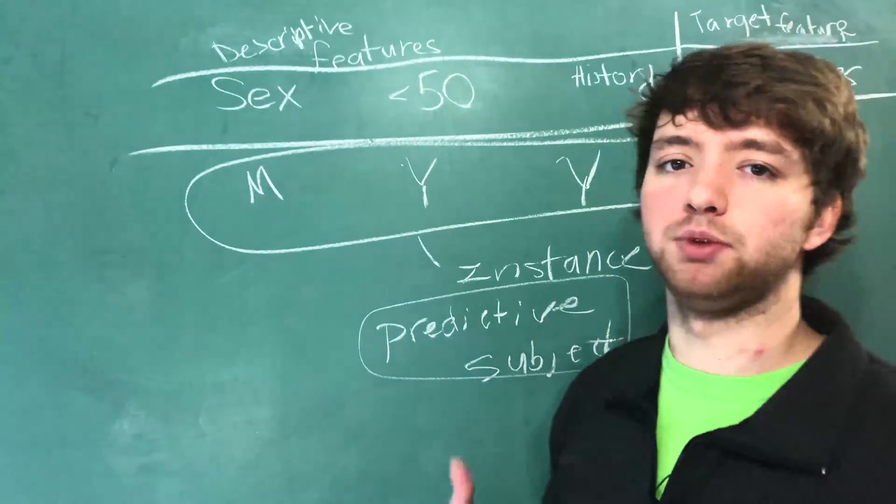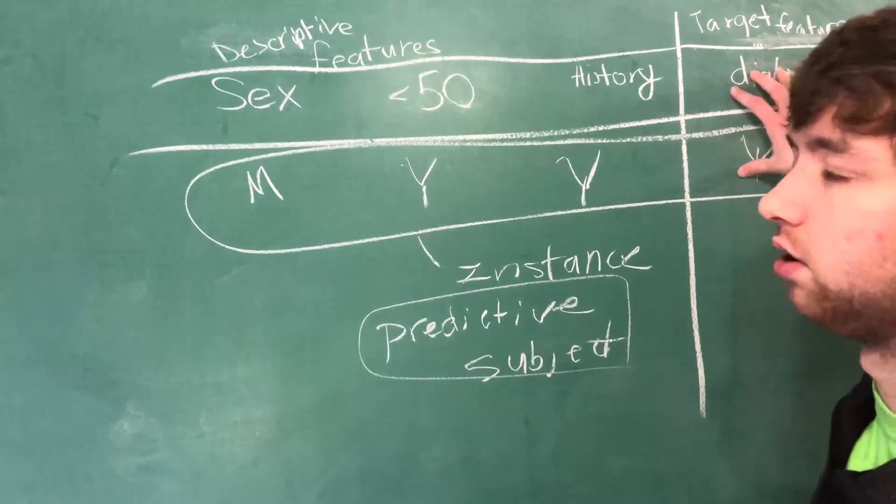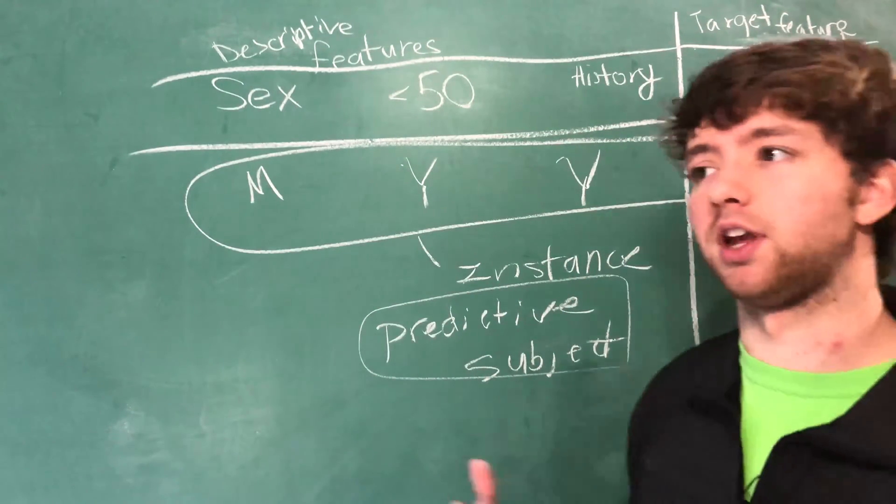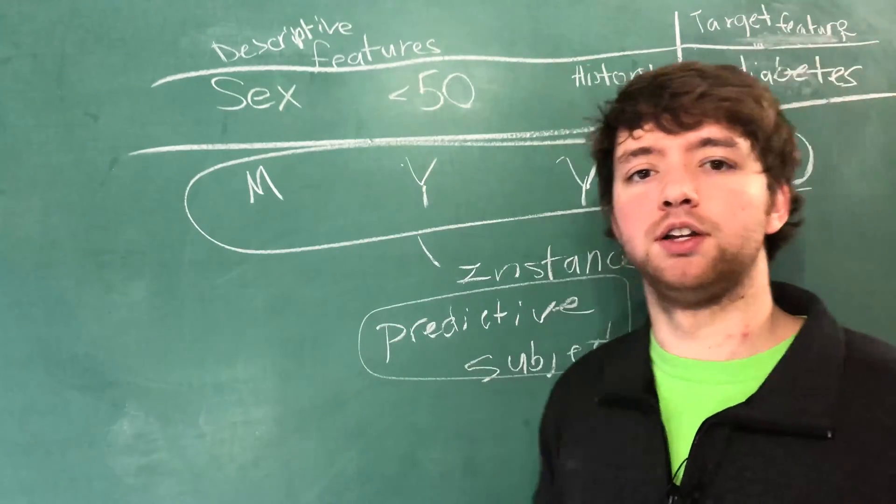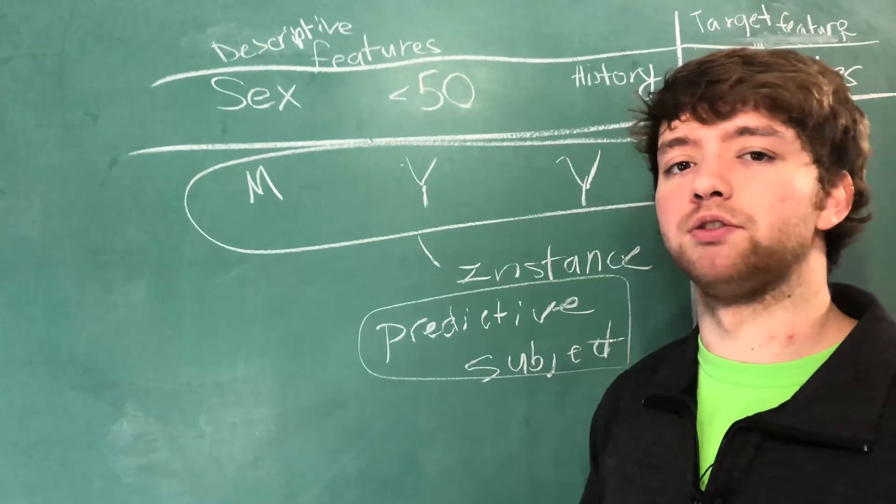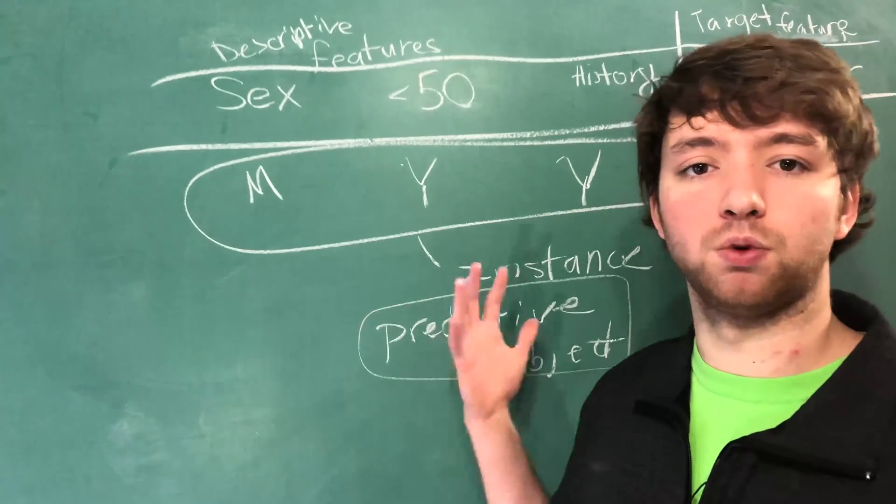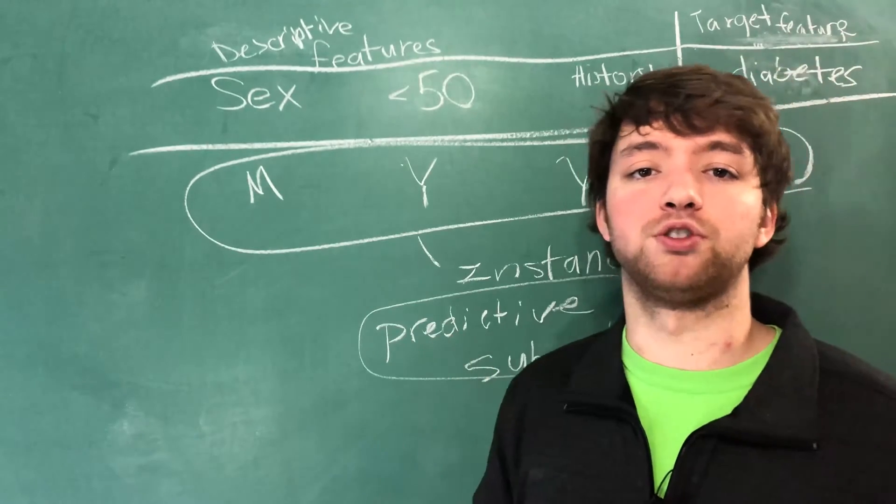Having these new words allows me to describe things with less talking. I could say the target feature and you automatically know I'm talking about this one, rather than saying the column that has the end result. So having these new words actually is going to make things easier rather than more complicated. Now that I have these words defined, there's a couple other things I want to talk about that are going to help you understand the analytics base table just a bit more.